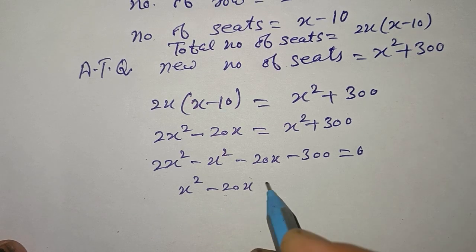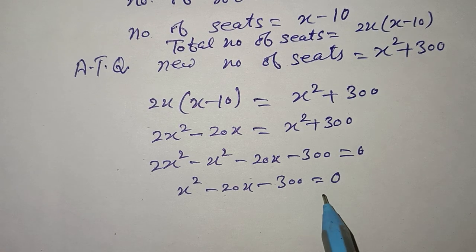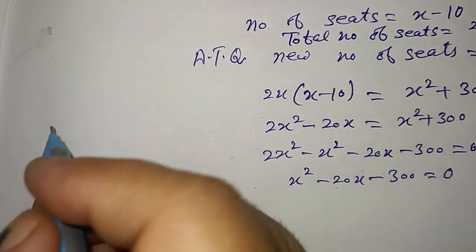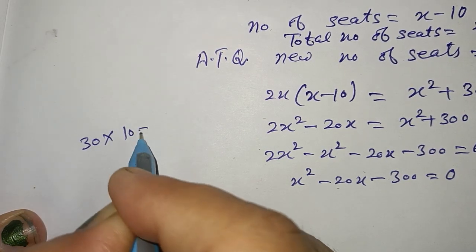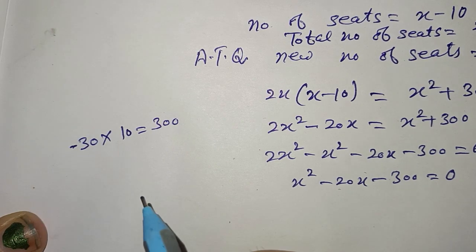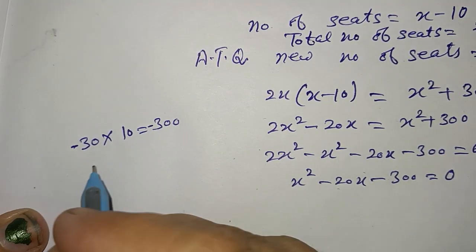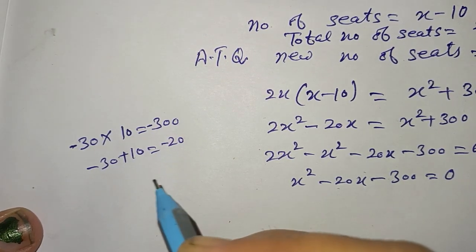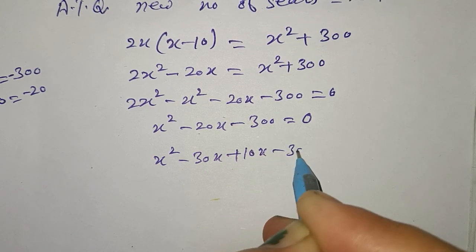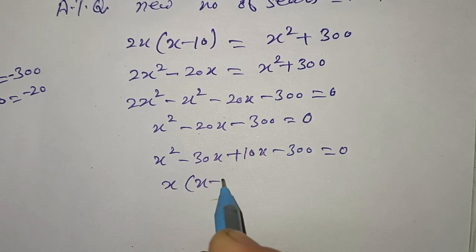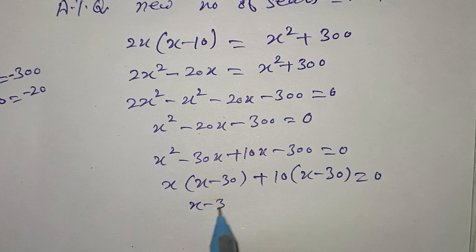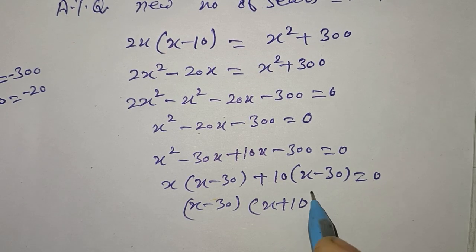So factors: multiply to get 300 and add to get minus 20. 30 into 10 = 300. I need minus 300 and minus 20. If 30 is negative, then minus 30 plus 10 equals minus 20. x² minus 30x plus 10x minus 300 = 0. x(x minus 30) plus 10(x minus 30) = 0. (x minus 30)(x plus 10) = 0.